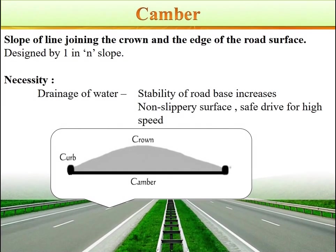Camber is the slope of the line joining the crown and the edge of the road's surface, designed by one in n slope.